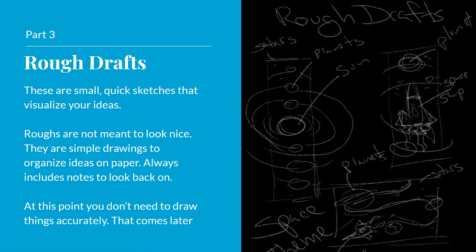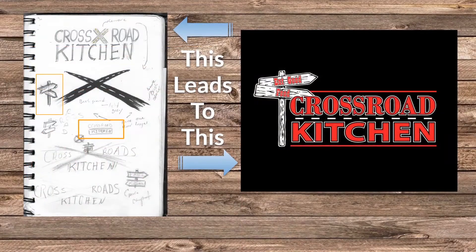Part 3: Rough Drafts. These are small, quick sketches that visualize your ideas. Roughs are not meant to look nice — they are simple drawings to organize ideas on paper. At this point, you don't need to draw things accurately; that comes later. You'll see that the rough drafts on the right include notes and nothing is truly drawn out. Here's an example from a sketchbook for a project — two parts of it have been highlighted, which lead to the final project.